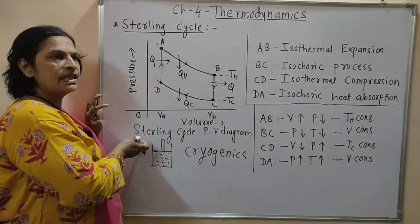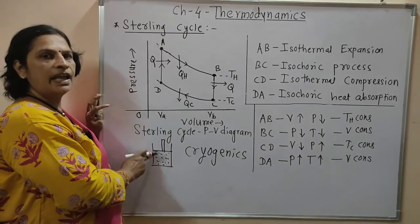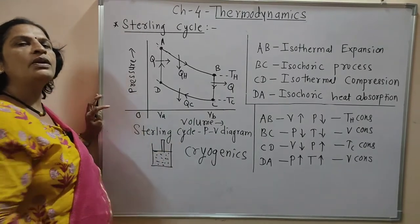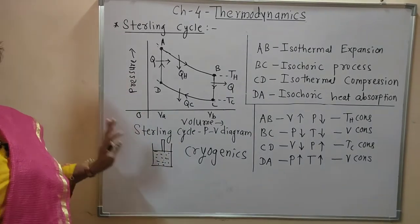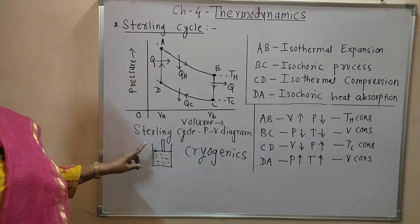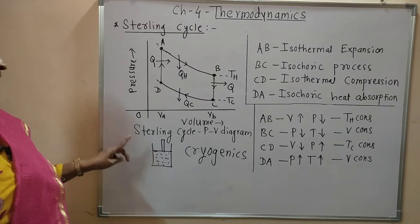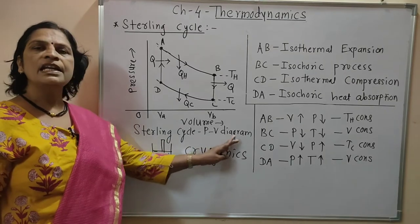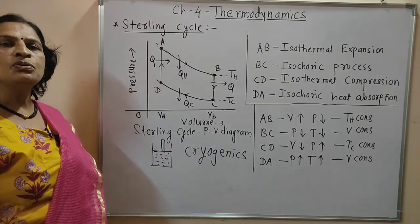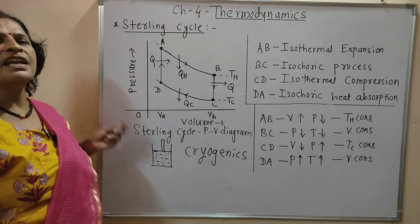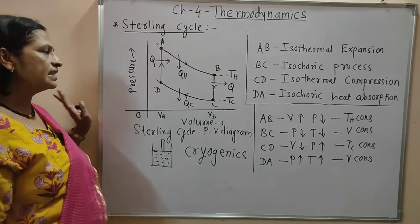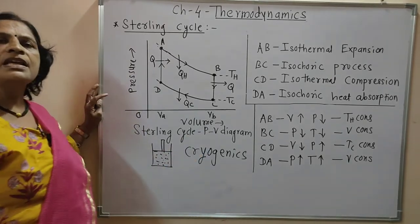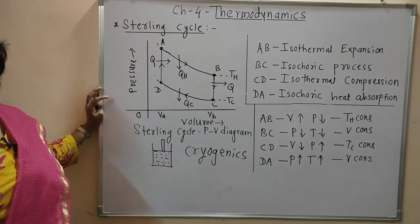The gases used as working substances — air, helium, hydrogen, and nitrogen — are liquefied using the Stirling cycle. So the Stirling cycle is used in the field of cryogenics to liquefy these gases. This is the use of the Stirling cycle.